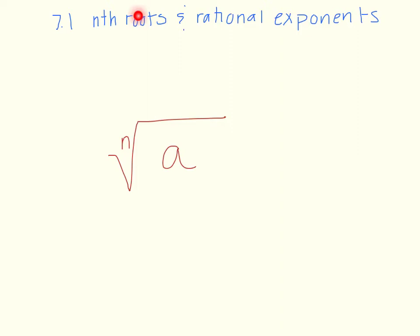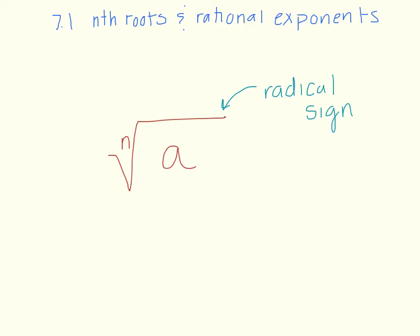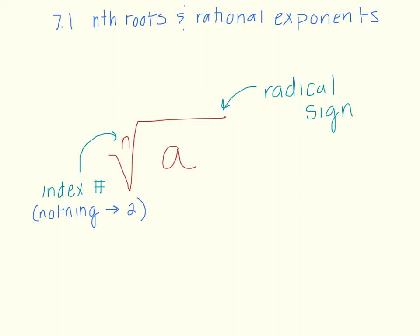I want to start by examining this particular symbol. Often when we see a symbol like this, we call it a square root, but to be more specific, we should call it a radical sign. A square root is a specific type of radical. What determines what type of radical it is — whether it's a square root, cube root, and so forth — would be our index number. If we don't see anything there, we know it is an index number of 2. The index number tells us how big a group needs to be in order for us to take things out.